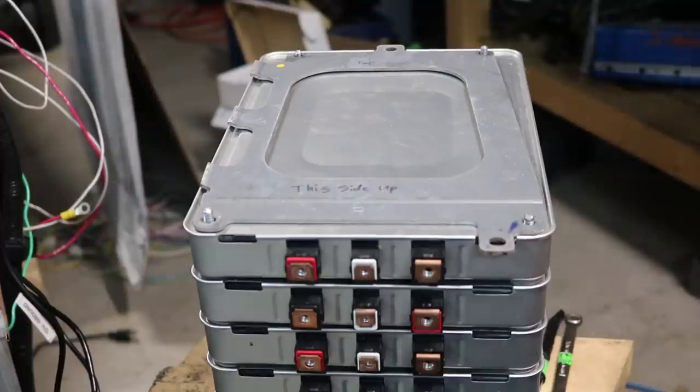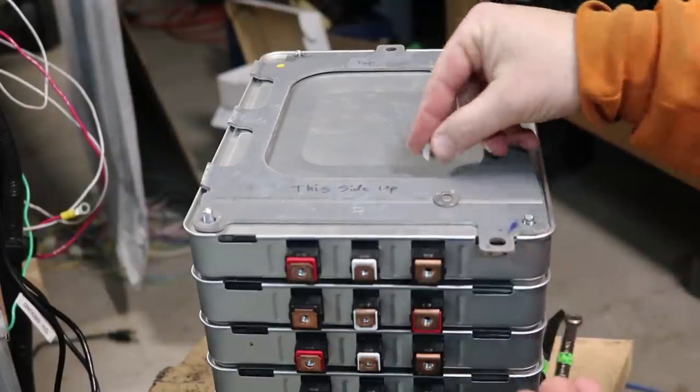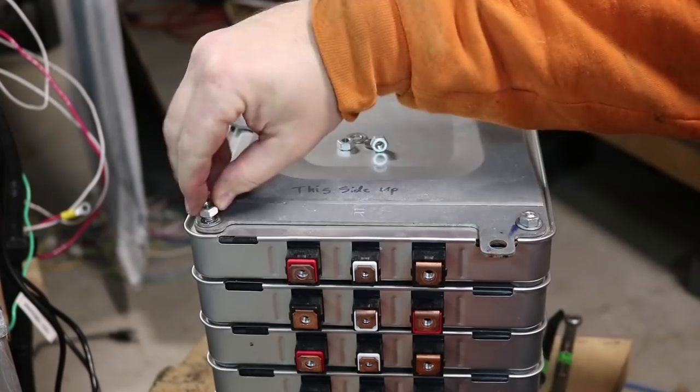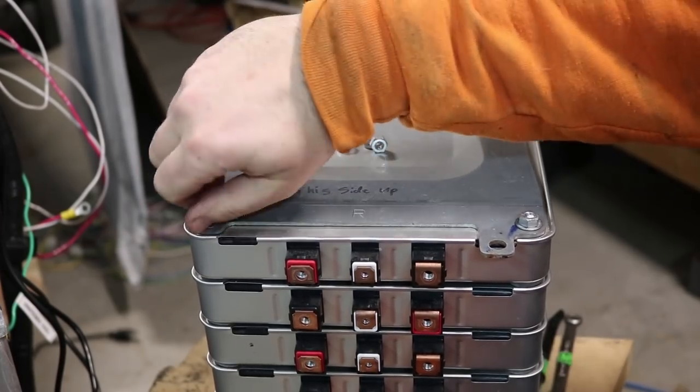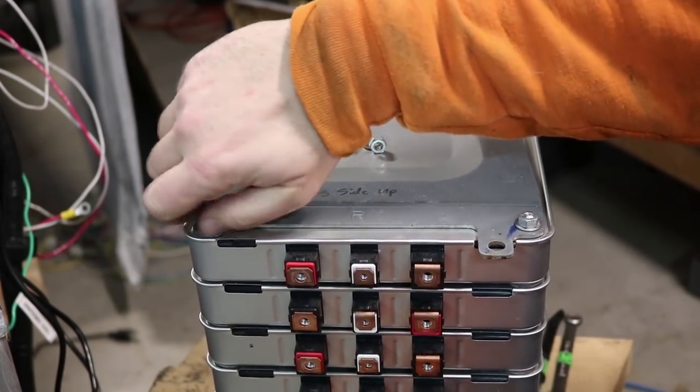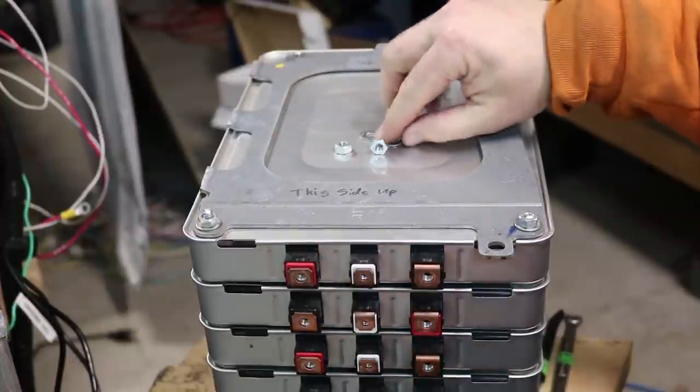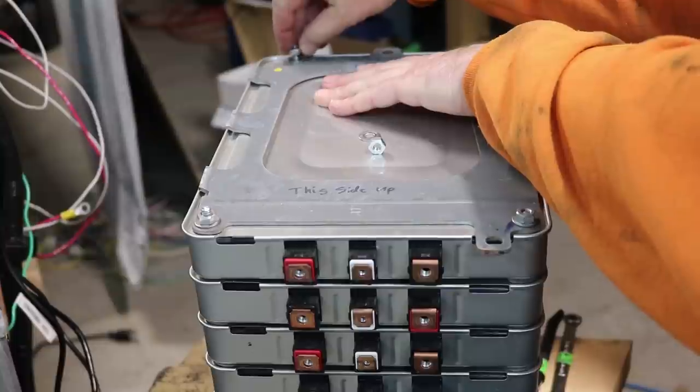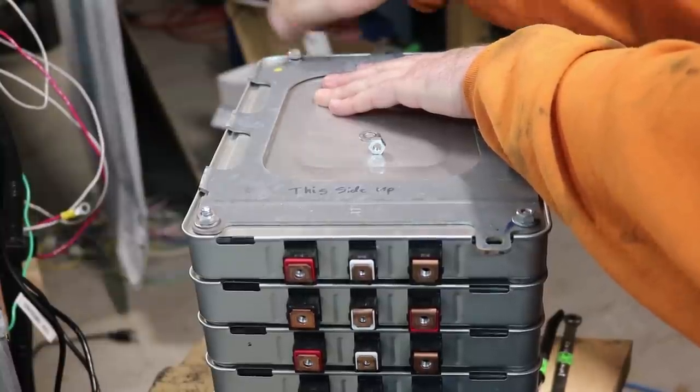And now I'm going to put a nut and washer on each of these. I'm just using plain washers right now. I'm probably going to double nut these. Plain washers just go on so much easier than nylock washers or nylock nuts.